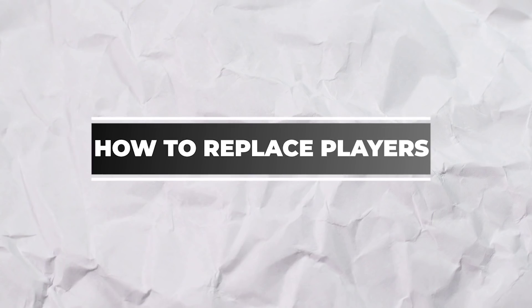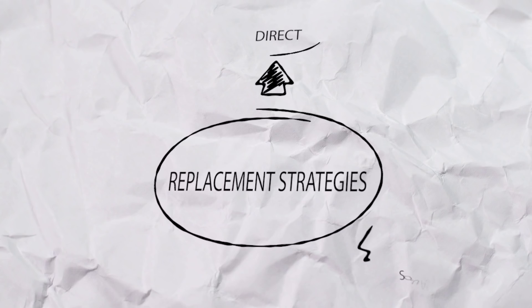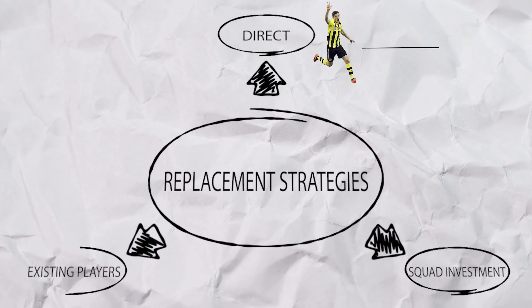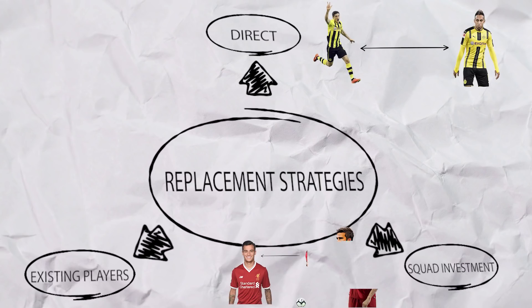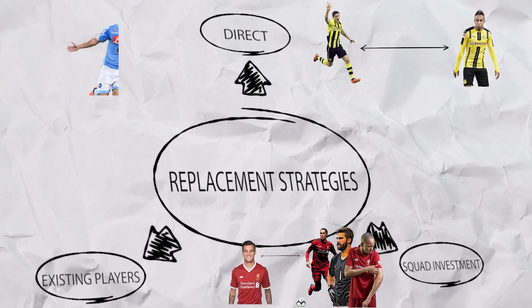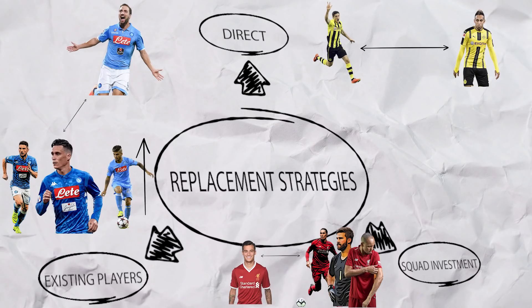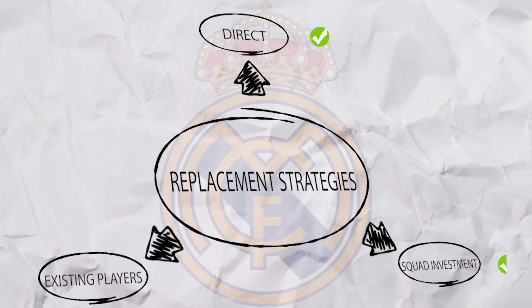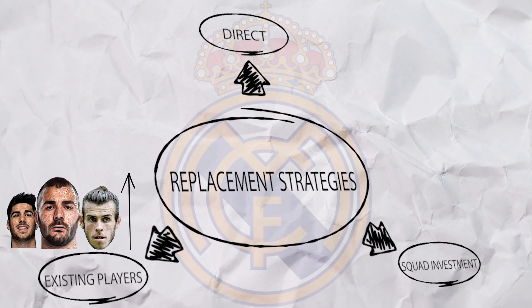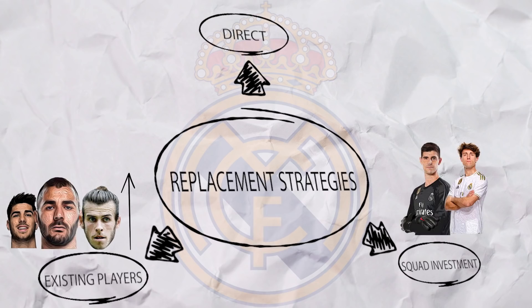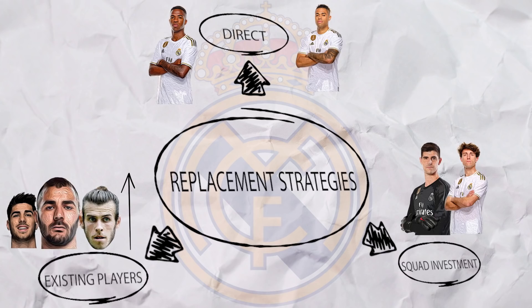So how did they try to replace him? There are a few ways you can try to replace an influential player: you could try to buy roughly a direct replacement, you could invest around the squad and try to improve the team as a whole, or depend on existing players to step up to fill the role. Madrid used a strange combination of all three. They hoped Bale, Benzema and Asensio would all increase their output, and also invested in the squad with Courtois, Odriozola, Mariano and Vinicius in the attacking end.